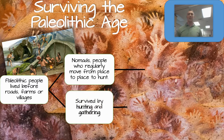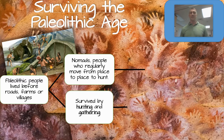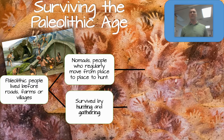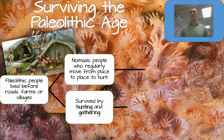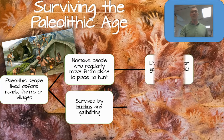They survived by hunting and gathering. Depending on where they lived really determined what they were hunting and gathering. If you lived near the ocean, you would be gathering things like clams, oysters, and fish. Those living in a forest environment would be hunting things more like rabbits and deer and gathering seeds, nuts, and berries. As they moved from place to place, they were hunting and gathering.